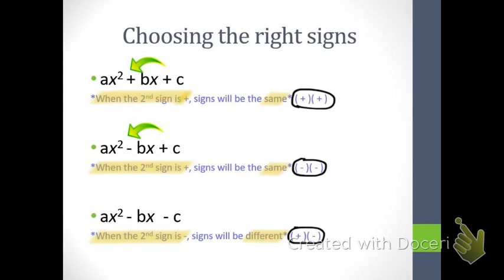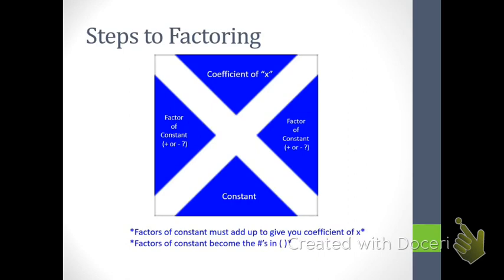The more we practice this the easier it will come, but you've got this reference sheet in front of you. As we move through the lesson, feel free to flip back until you've got it memorized. Here are the steps to factor. You'll notice in your notes the X printed out very dark, so right beside the picture in your notes, go ahead and draw your own X. At the top of the X we are going to put the coefficient of X — in quotes because the variable isn't always X, it might be W, Y, or Z.